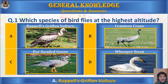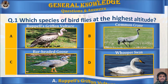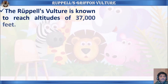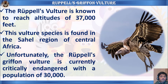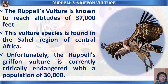The answer is A) Rüppell's griffon vulture. Let's learn some facts: the Rüppell's griffon vulture is known to reach altitudes of 37,000 feet. This vulture species is found in the Sahel region of Central Africa. Unfortunately, the Rüppell's griffon vulture is currently critically endangered, with a population of only 30,000.